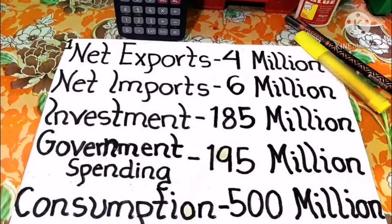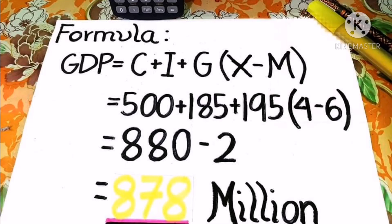For number 1, we have: net exports — 4 million, net imports — 6 million, investment — 185 million, government spending — 195 million, and consumption — 500 million. To get the GDP expenditure, we use the formula: GDP = C (consumption) + I (investment) + G (government spending) + (X − M), where X is net exports and M is net imports.